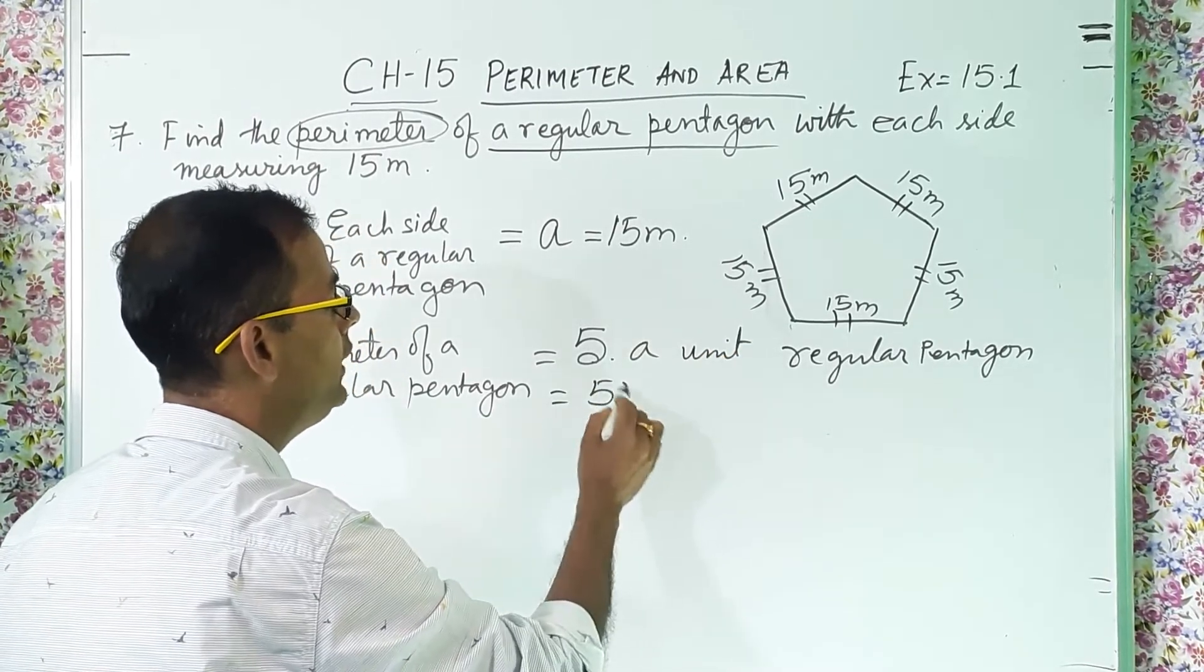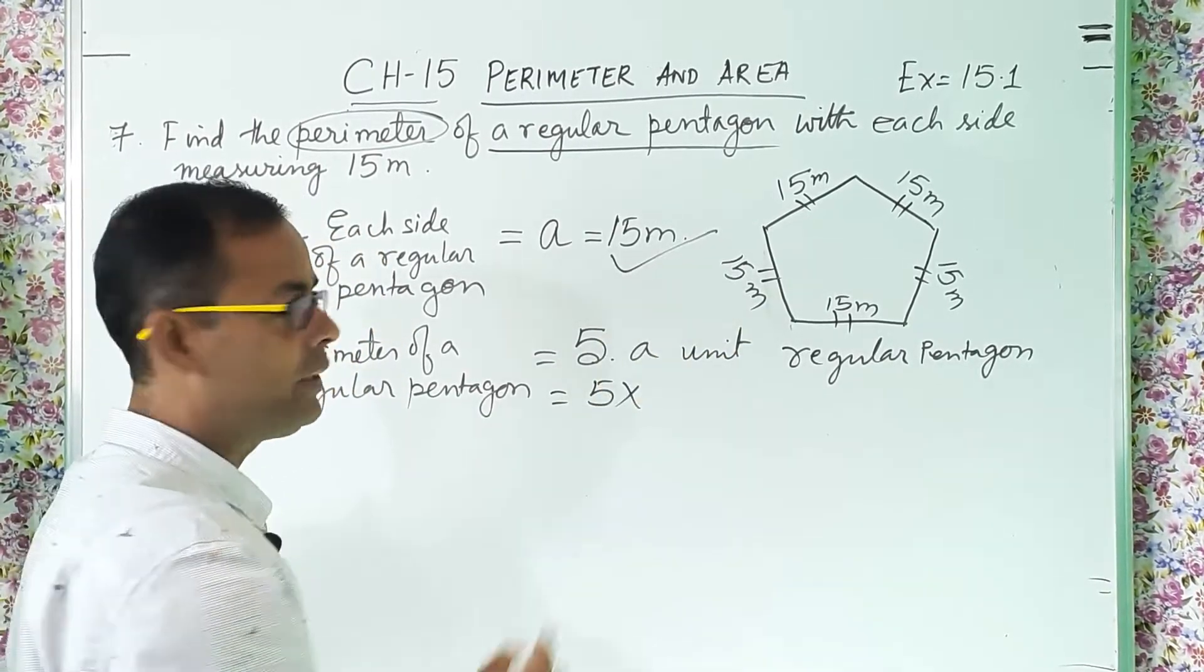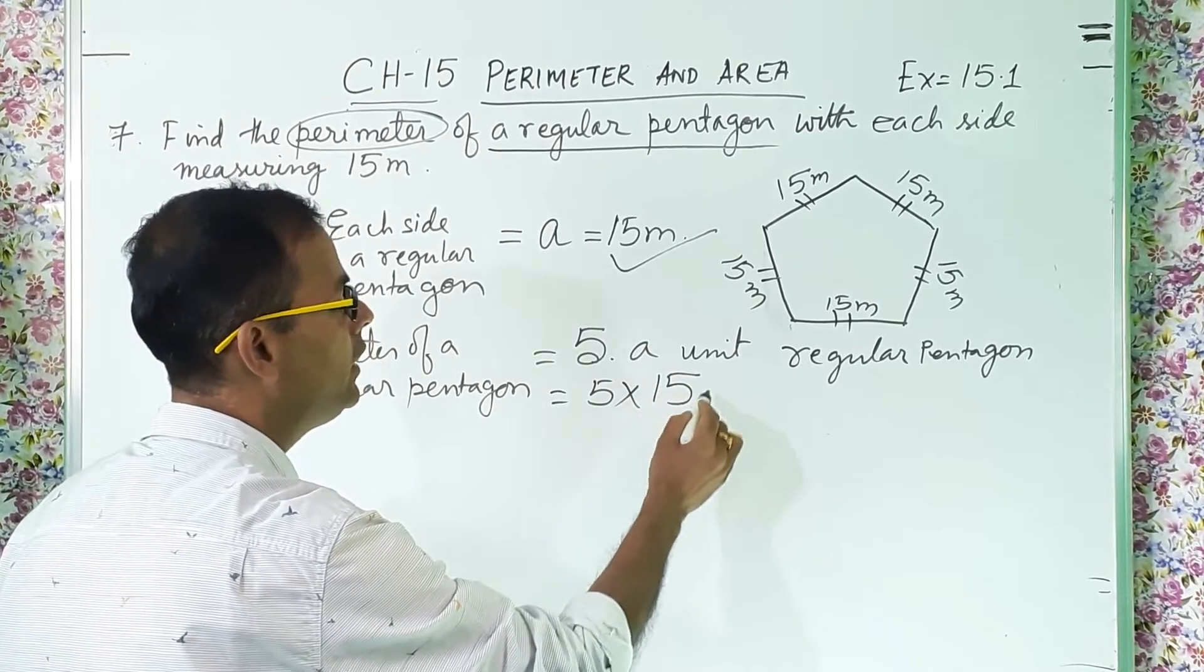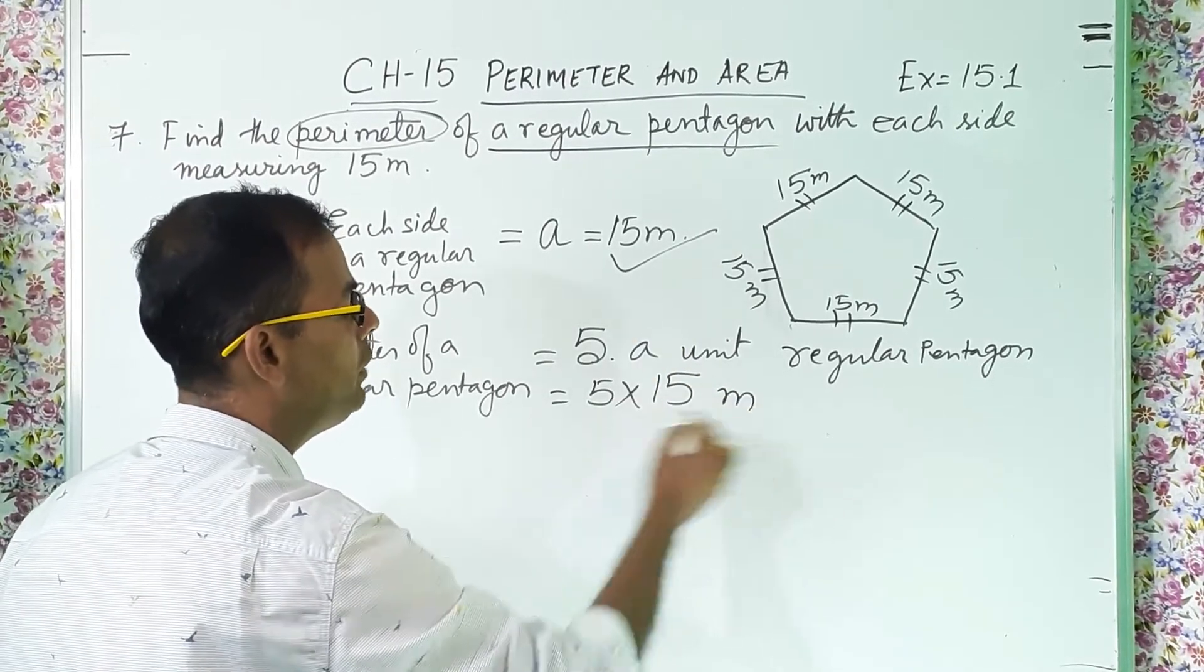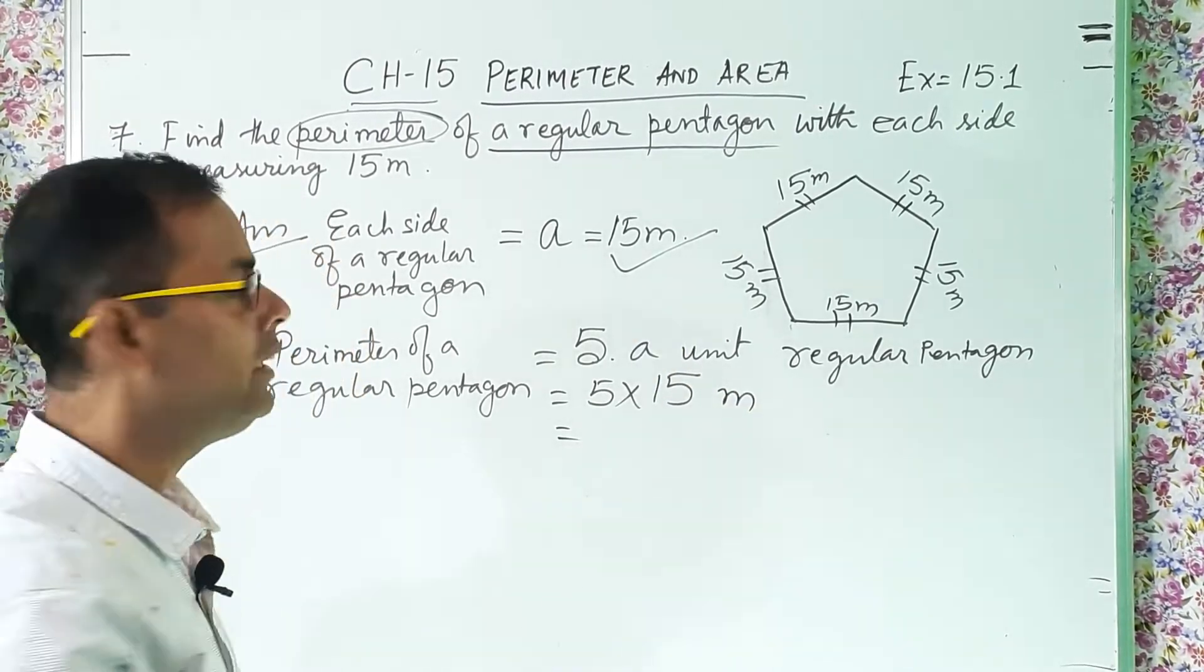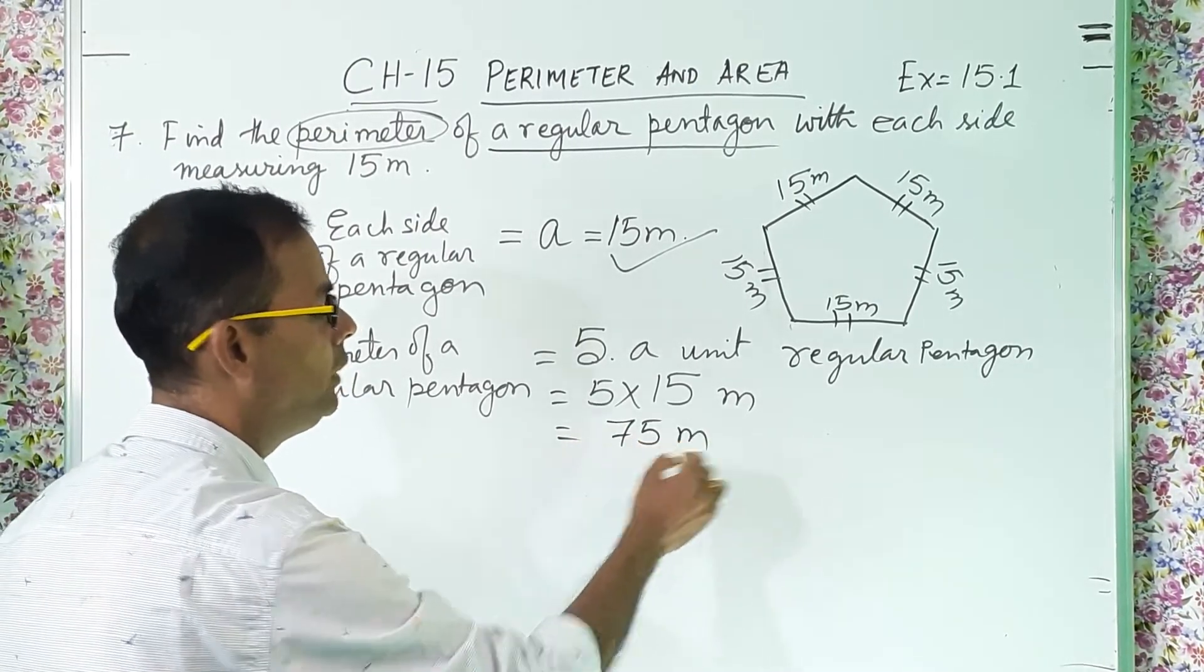Now 5 into a value is how much? 15. So we will write here 15 and the unit is meter. So we will multiply and the answer will be how much? 75 meter.